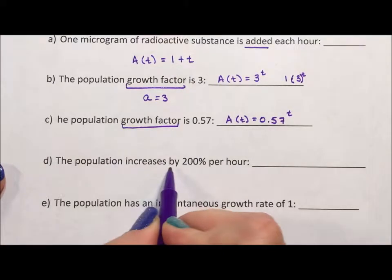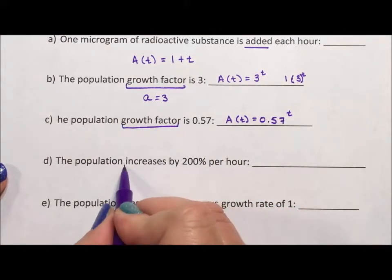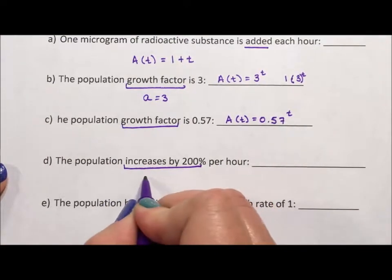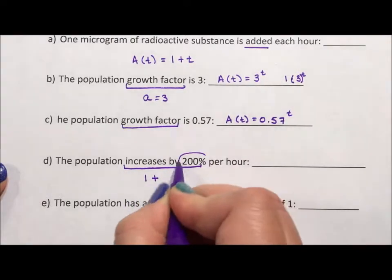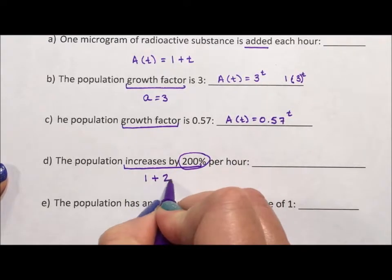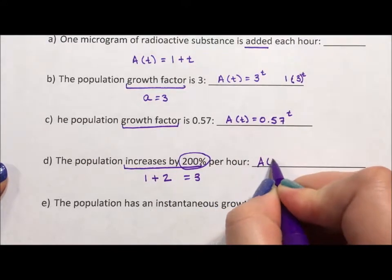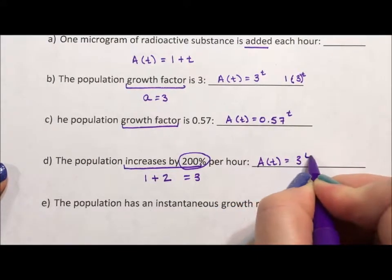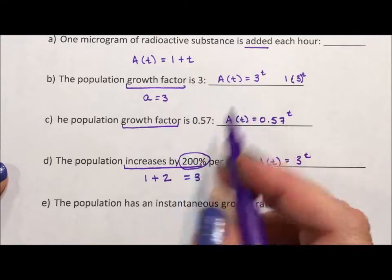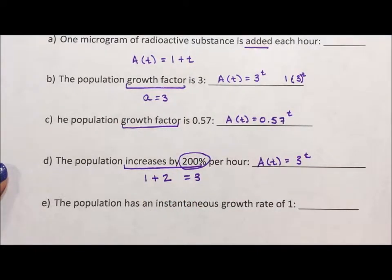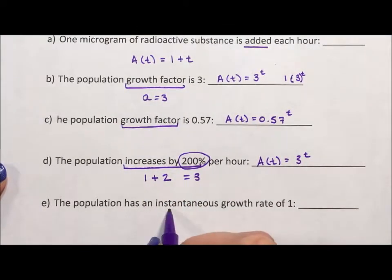The population increases by 200%. When you increase by a percent, you do 1 plus the percent as a decimal. So this is A(t) = 3^t. A growth factor of 3 is the same as increasing by 200%.